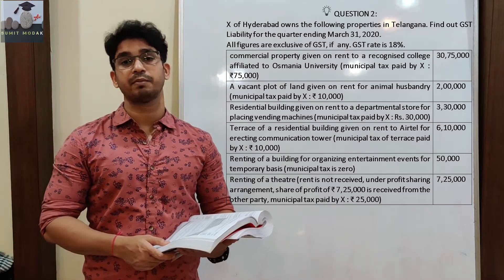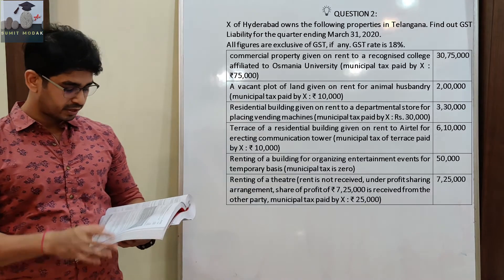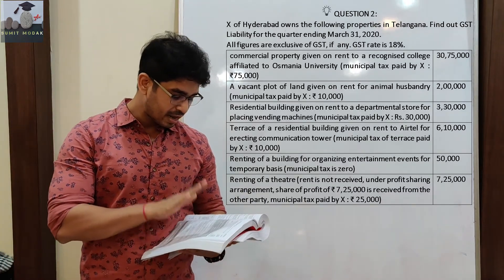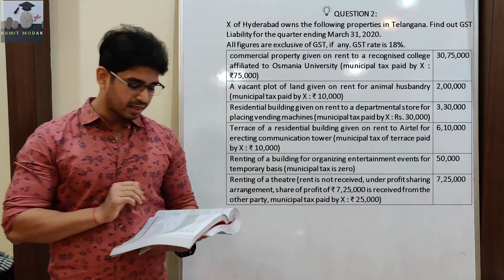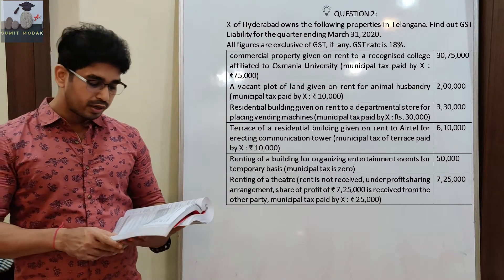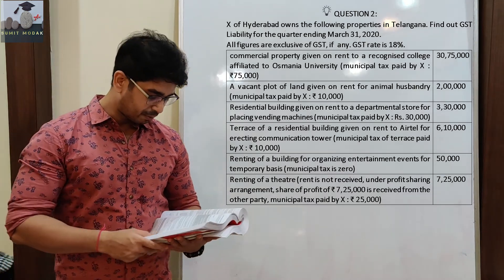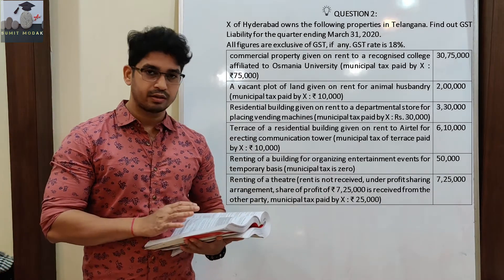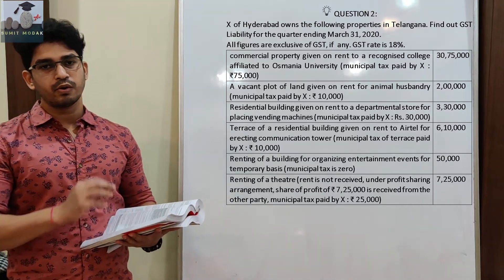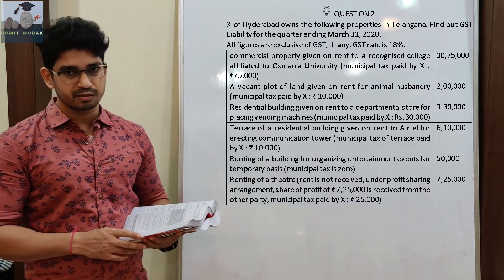Municipal tax paid by Mr. X is Rs. 25,000. देखें, यहाँ पर पहले हम लोगों को question समझना है। X जो हैं, वो हैदरबाद के हैं। उनके पास बहुत सारी properties हैं जो वो अलग-अलग purposes के लिए भाड़े पे दे रहे हैं।